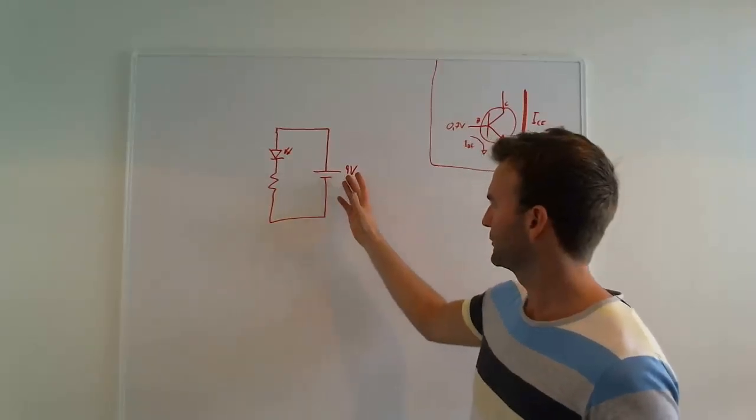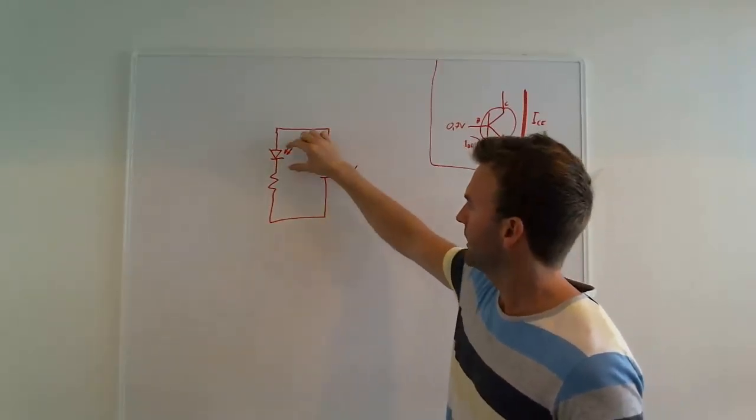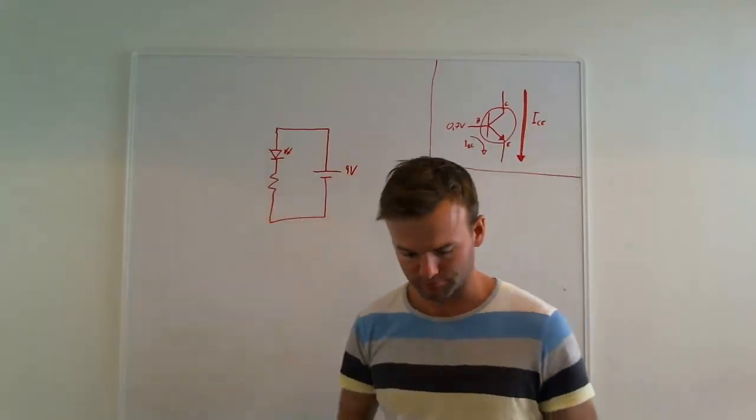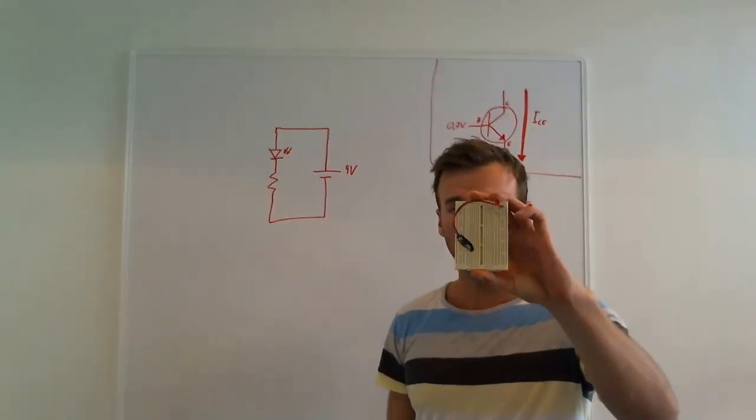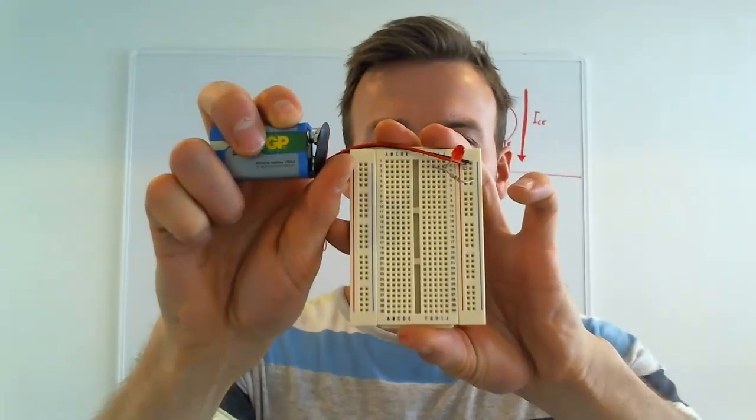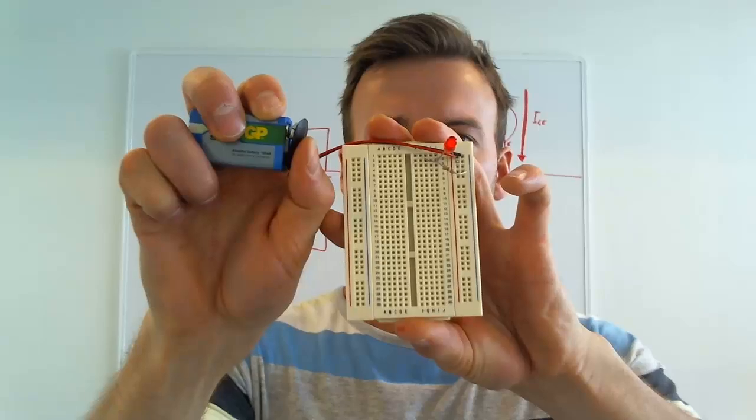Here we have a simple circuit with a 9 volt battery, an LED and a resistor. Here I have the circuit connected on a breadboard and a battery. When I connect the battery to the circuit, the LED lights up.